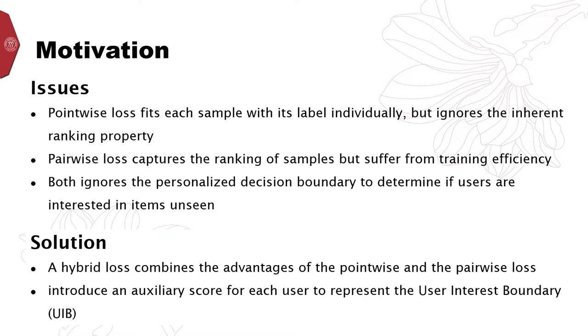Thus, we propose a hybrid loss of the pointwise and the pairwise to combine the advantages of both, and introduce an auxiliary score for each user to represent the user interest boundary, named UIB.